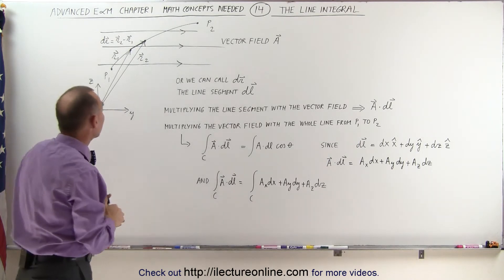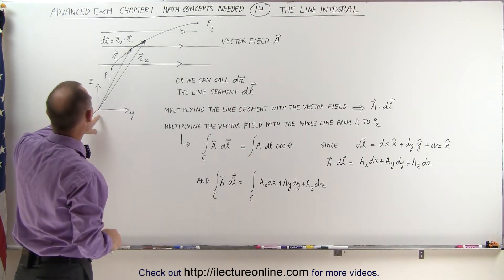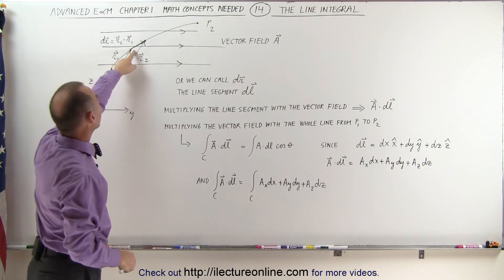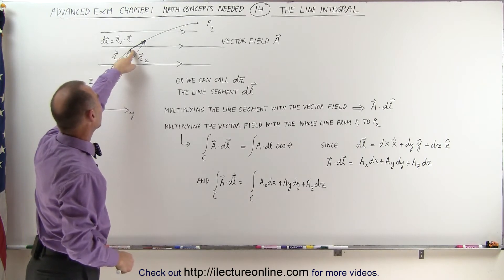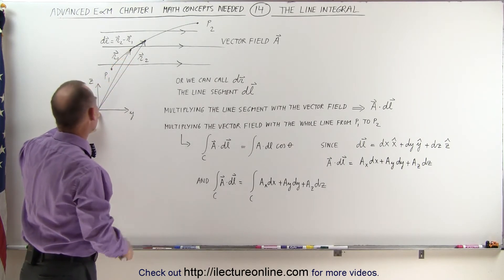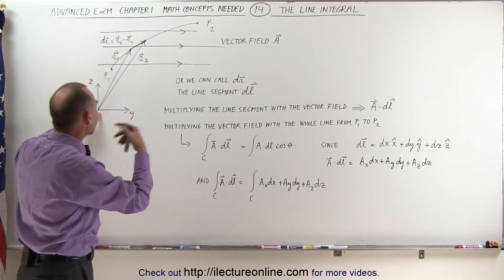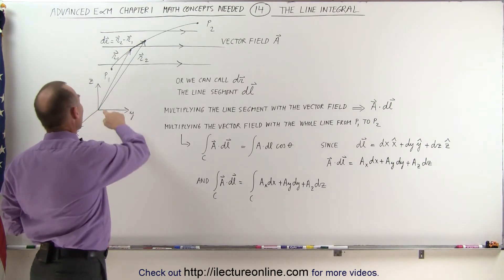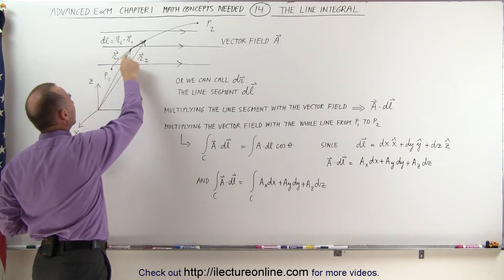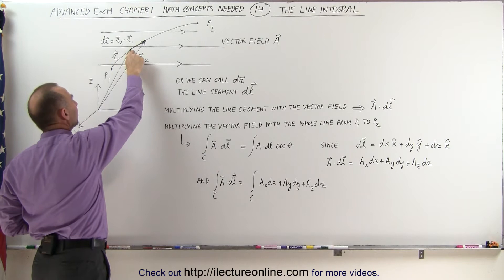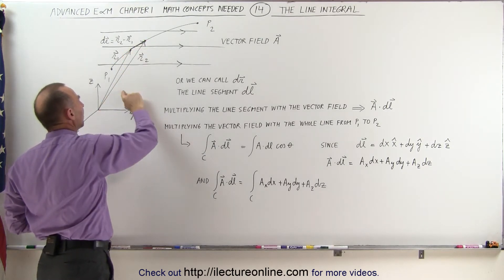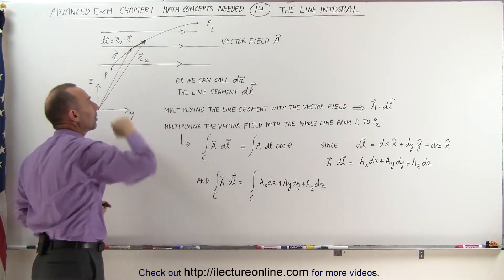Let's say that we pick an arbitrary point on that line. That point is then identified by a position vector, so our position vector r1 points to a particular point on the line, and a slight distance away from that we have another point on the line.